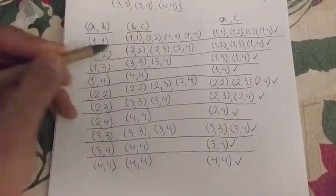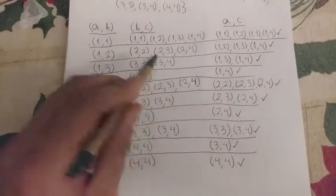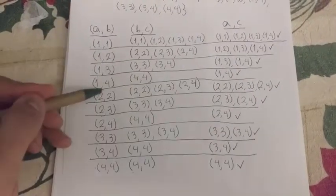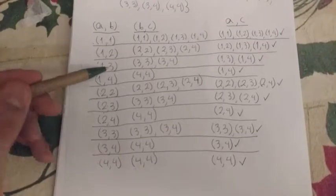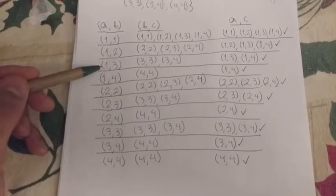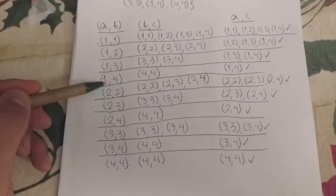So one, two and two, two makes one, two, which is right here. One, two and two, three makes one, three. And one, two and two, four makes one, four, which are all here. One, three and three, three makes one, three, which is the same, which is AB. And one, three and three, four makes one, four, which is right below.